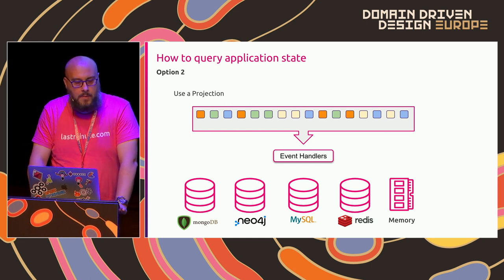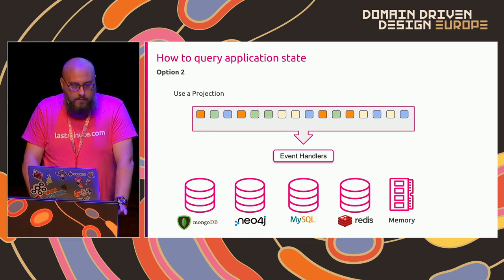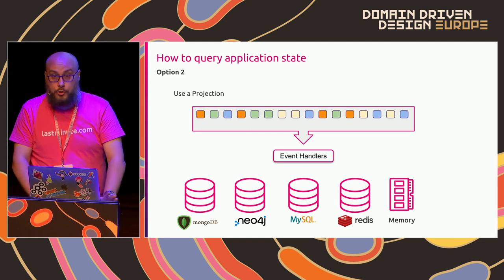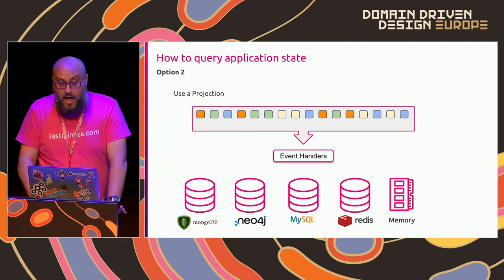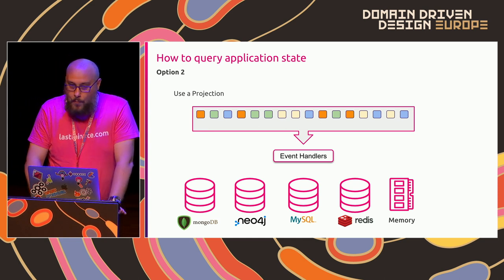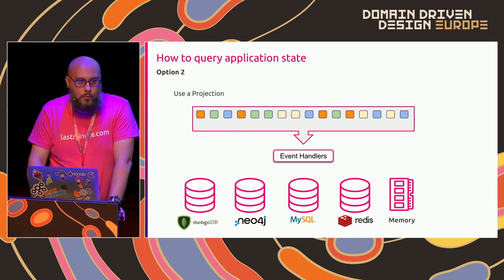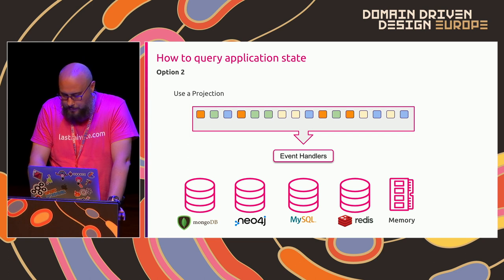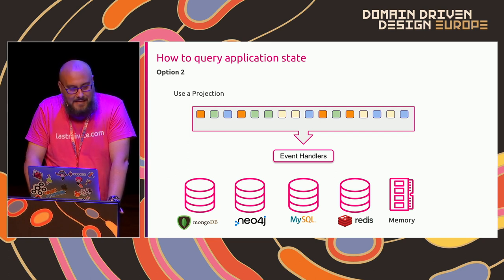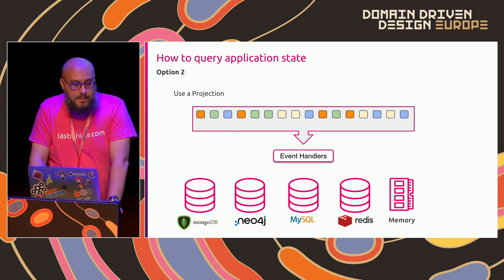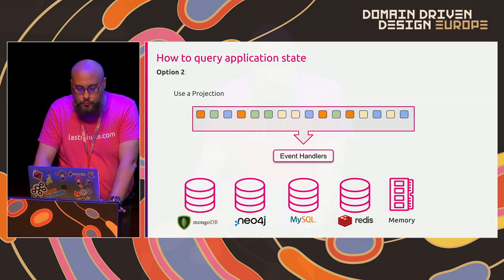Just to be clear, I'm not an advocate of having all these technologies in production — we have options. Having everything in production won't help us make new friends in operations. What we have here is a lot of options on how we can evolve our system, and we are free to choose the best technology to support our users and various use cases.